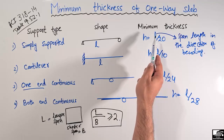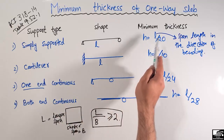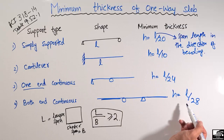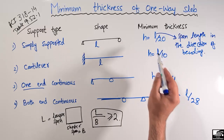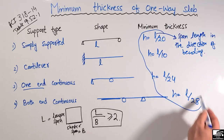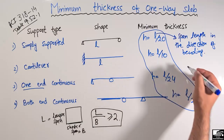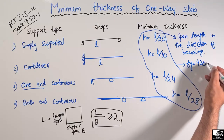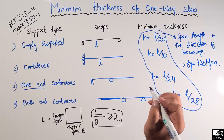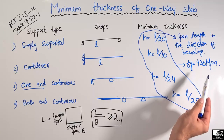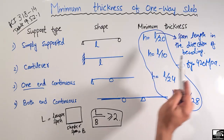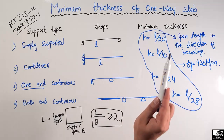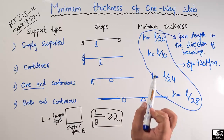Accordingly, we have to determine the length of the slab. Now, all of these minimum thickness formulas are valid only when there is a steel bar of yield strength 420 MPa. If we have 420 MPa strength steel bars used in the slabs, then we can use these formulas to find the minimum thickness of a one-way slab.